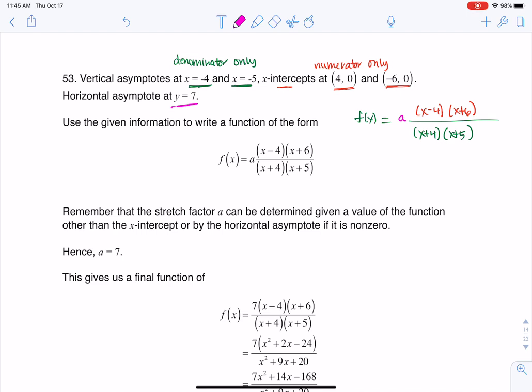Because if we were to go ahead and do some multiplication here, if I was to foil this out, I'll leave the a here. On the numerator I'm looking at x squared plus 2x minus 24, and on the denominator I'm looking at x squared plus 9x plus 20.